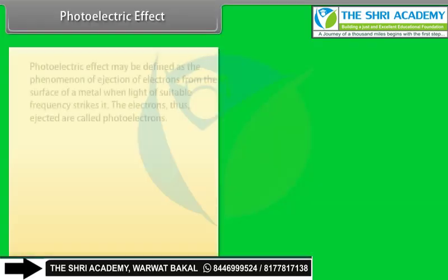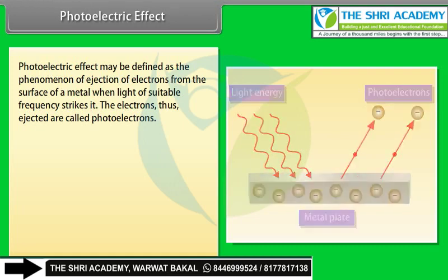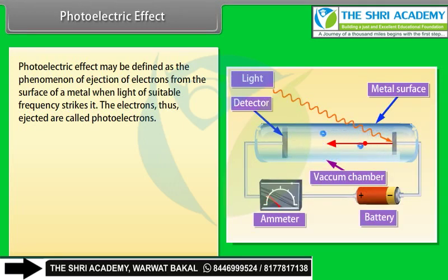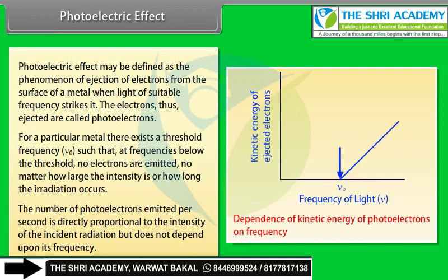Photoelectric effect: The phenomenon of ejection of electrons from the surface of a metal when light of suitable frequency strikes it; the ejected electrons are called photoelectrons. For a particular metal, there exists a threshold frequency ν₀ — at frequencies below the threshold, no electrons are emitted regardless of intensity or duration. The number of photoelectrons emitted per second is directly proportional to the intensity of the incident radiation but does not depend on frequency.